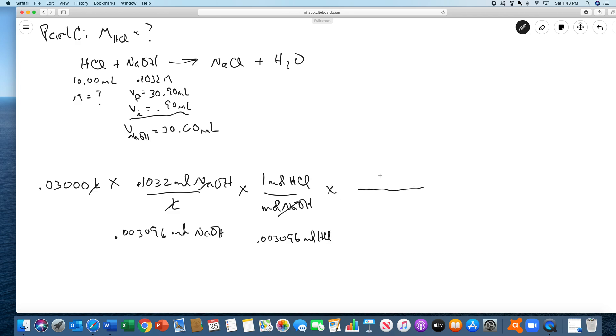That original flask had 10 mLs of HCl. So all of those moles are in 10 mLs, which is of course 0.0100 liters. And so the molarity of the HCl is 0.3096 moles of HCl per liter, which is of course 0.3096 molar HCl.